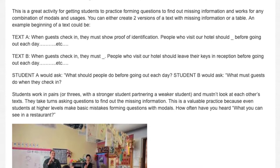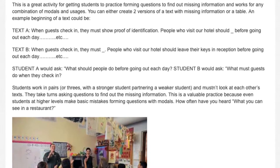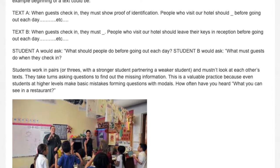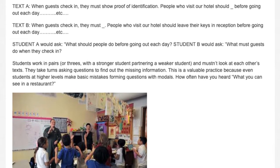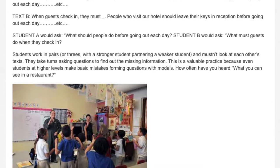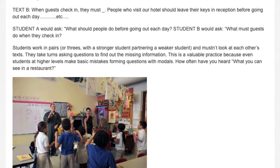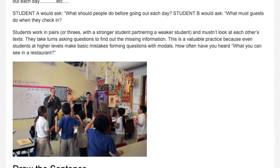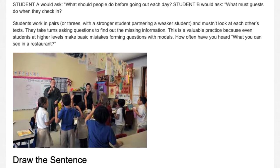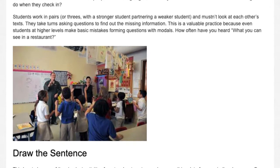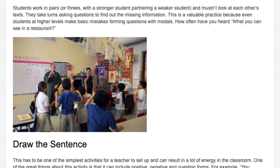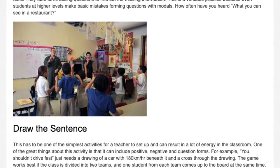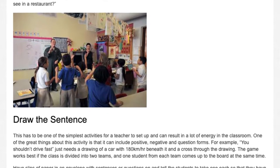An example text: Text A — 'When guests check in, they must show proof of identification. People who visit our hotel should [blank]. Before going out each day...' Text B — 'When guests check in, they must [blank]. People who visit our hotel should leave their keys in reception before going out each day.' Student A would ask: 'What must guests do when they check in?' Students work in pairs or threes, with a stronger student partnering a weaker student, and mustn't look at each other's texts. They take turns asking questions to find the missing information — valuable even for higher-level students who make basic mistakes forming questions with modals.